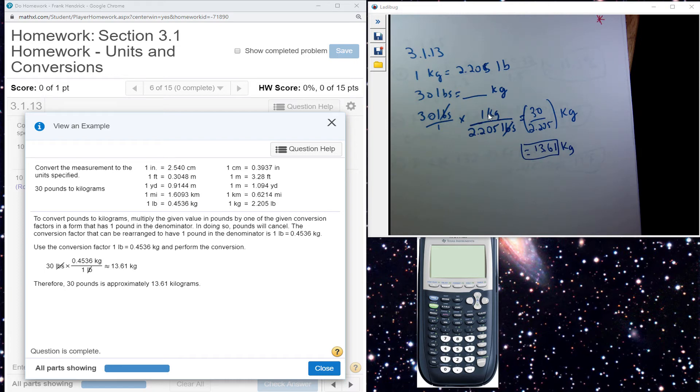Then I think about that relationship between kilograms and pounds. 1 kilogram is 2.2 pounds. So when I multiply, pounds cancel out, and then 30 over 2.205, which gives me 13.61 kilograms.